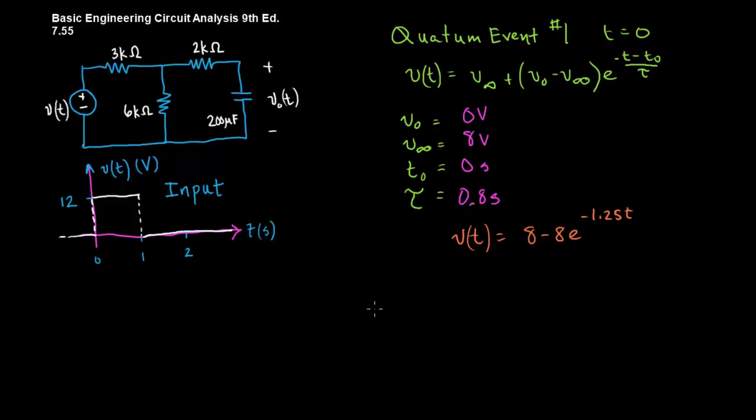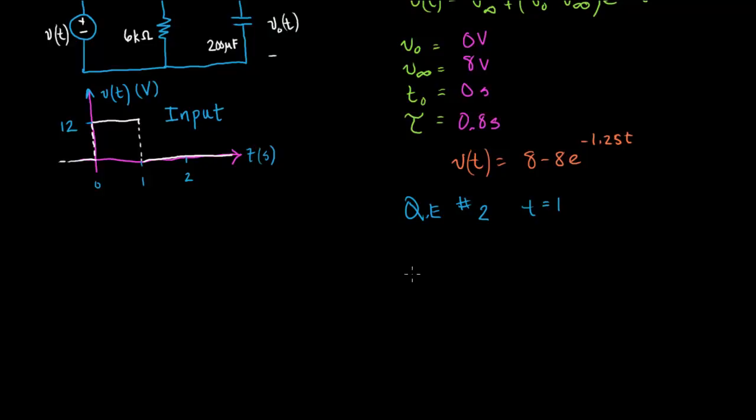Now, let's look at quantum event number 2. And that happens at T equals 1. We have the same set of questions to answer. What's V0? What's V at infinity? What's T0? And what's tau? We already know tau. 0.8 seconds. Nothing's changed there. T0 equals 1.